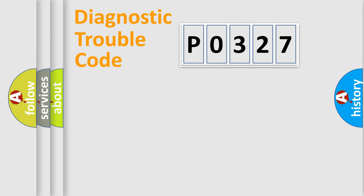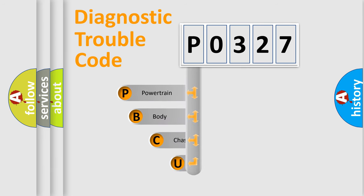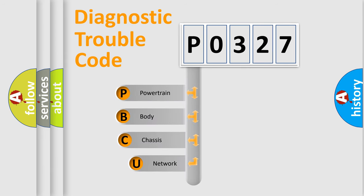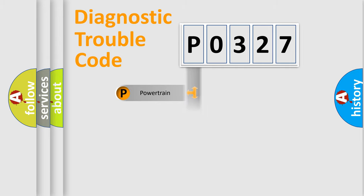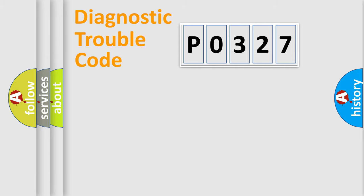Let's do this. First, let's look at the history of diagnostic fault code composition according to the OBD2 protocol, which is unified for all automakers since 2000. We divide the electric system of an automobile into four basic units: Powertrain, Body, Chassis, and Network.